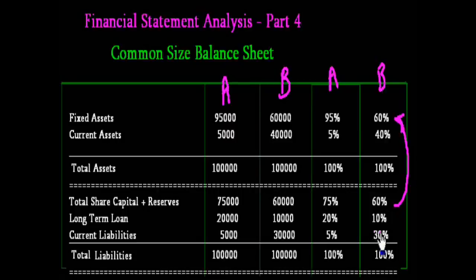But in Company B's case, current assets are 40% and current liabilities are 30%. That 10% is our working capital, which is good for paying operating expenses, buying current assets, or paying current liabilities. This is the second point. Thank you very much.